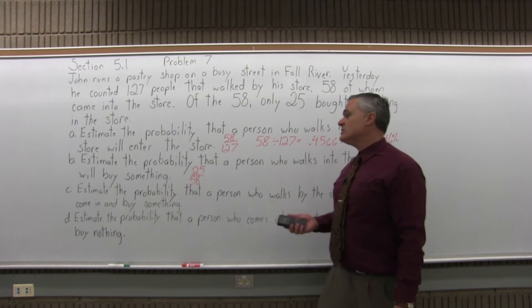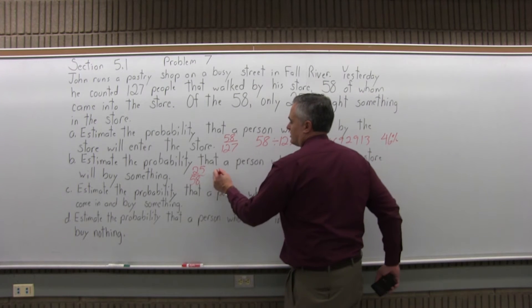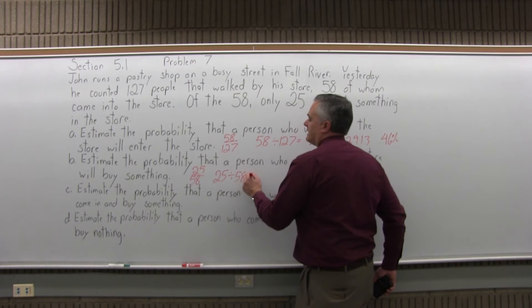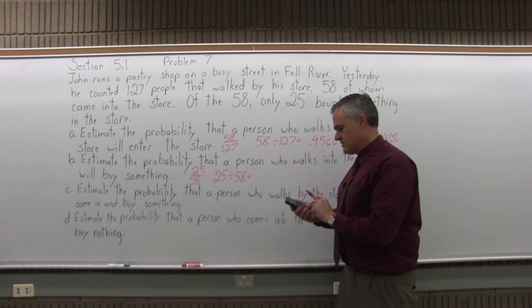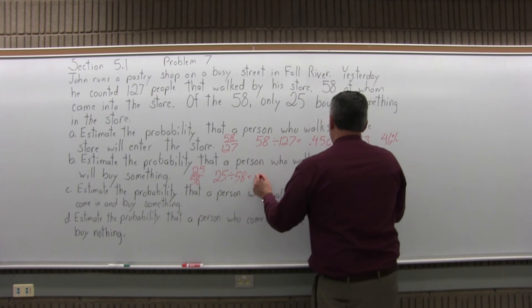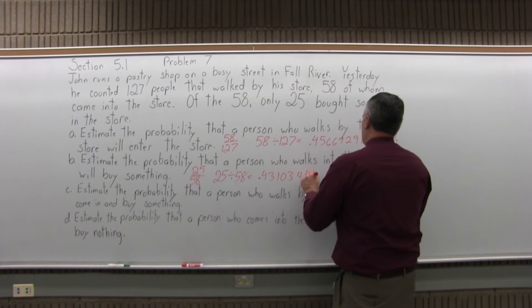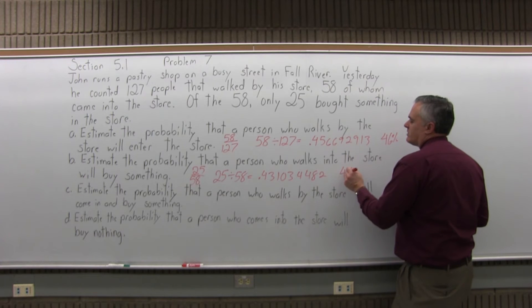That doesn't reduce, but you can turn it into a decimal if you like. With your calculator, 25 divided by 58 equals 0.431034482, which rounds to about 0.43 or 43% probability.